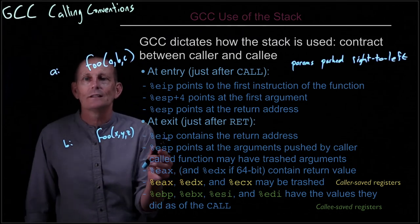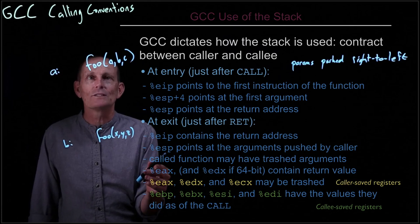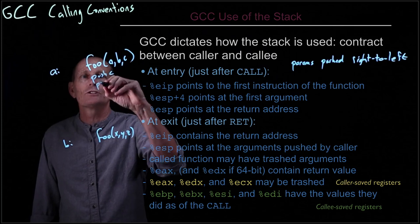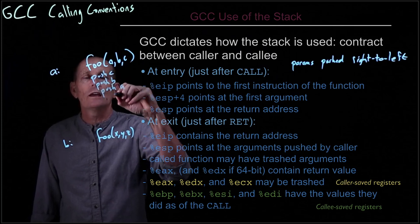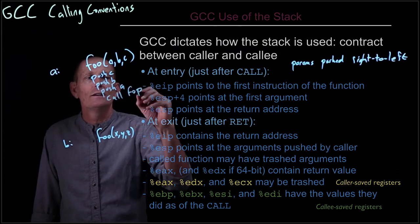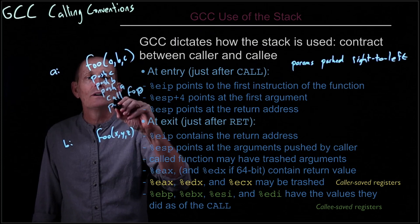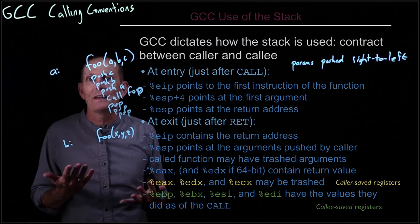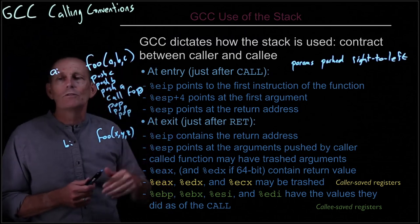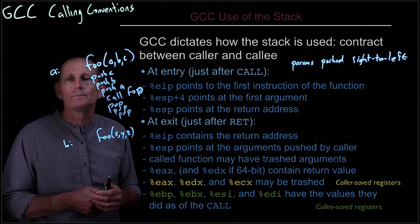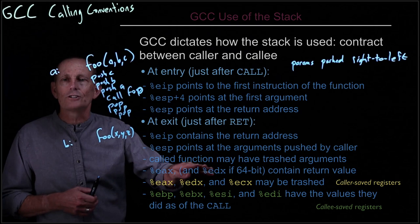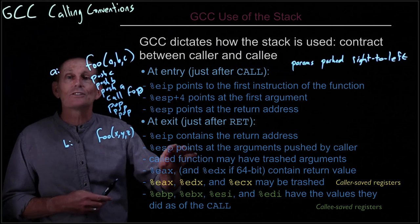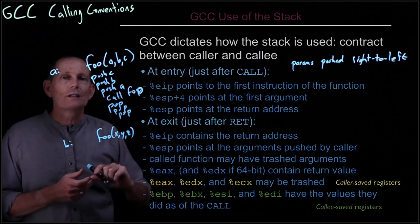So at exit, EIP contains the return address and ESP points at the arguments. Therefore this looks like: push C, push B, push A, call foo, then pop, pop, pop — or instead of three pops, just adjust the stack pointer by one instruction since there's no reason to use three instructions when one would work. Worth noting: the called function has the right to change the elements on the stack, so the arguments may be trashed.